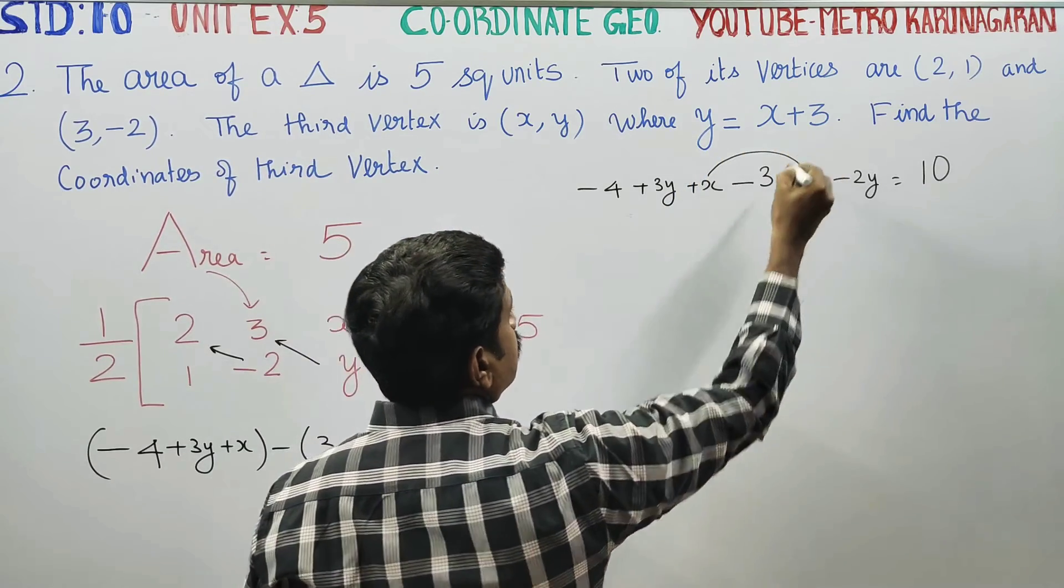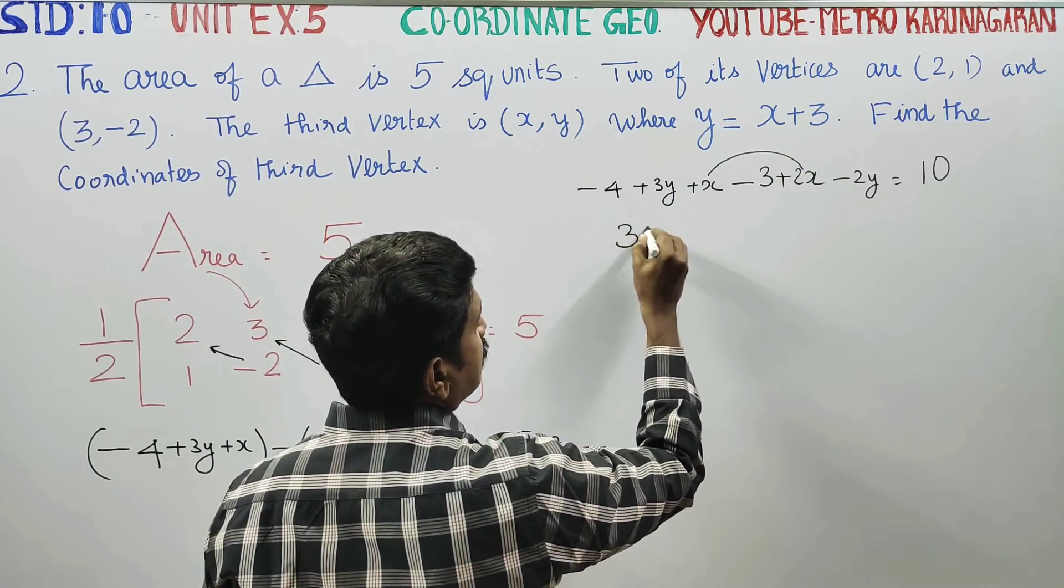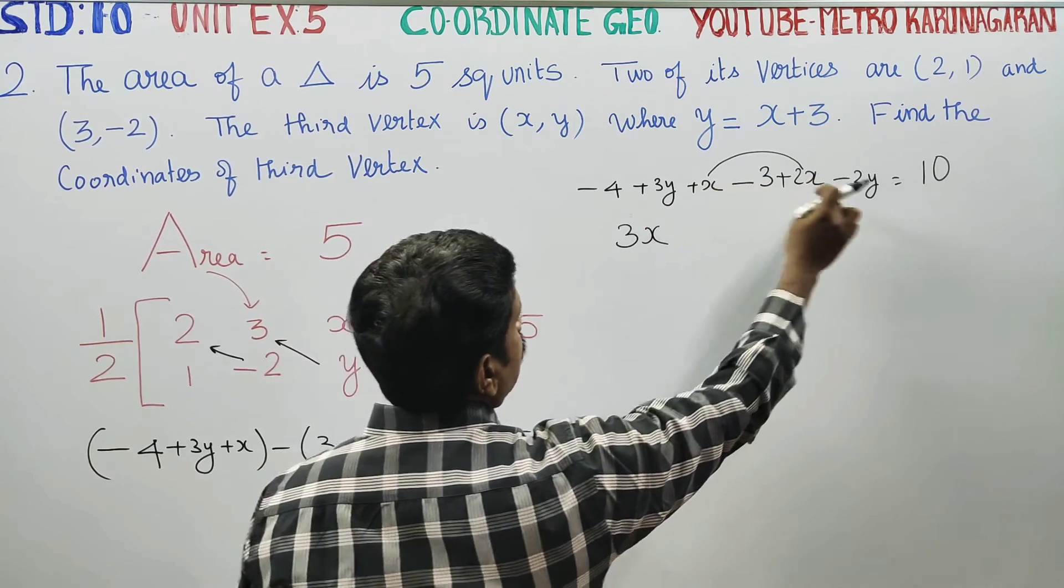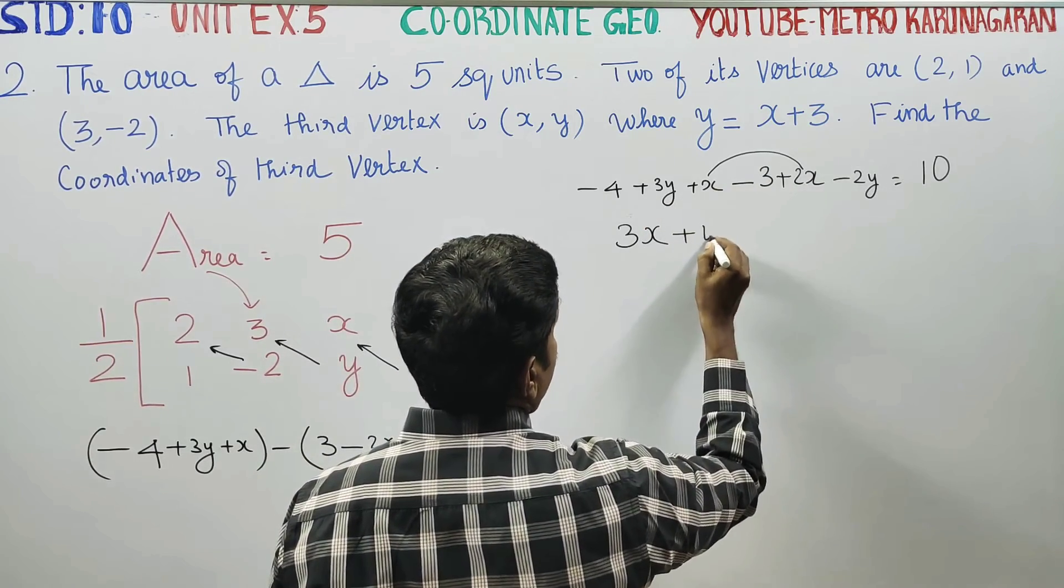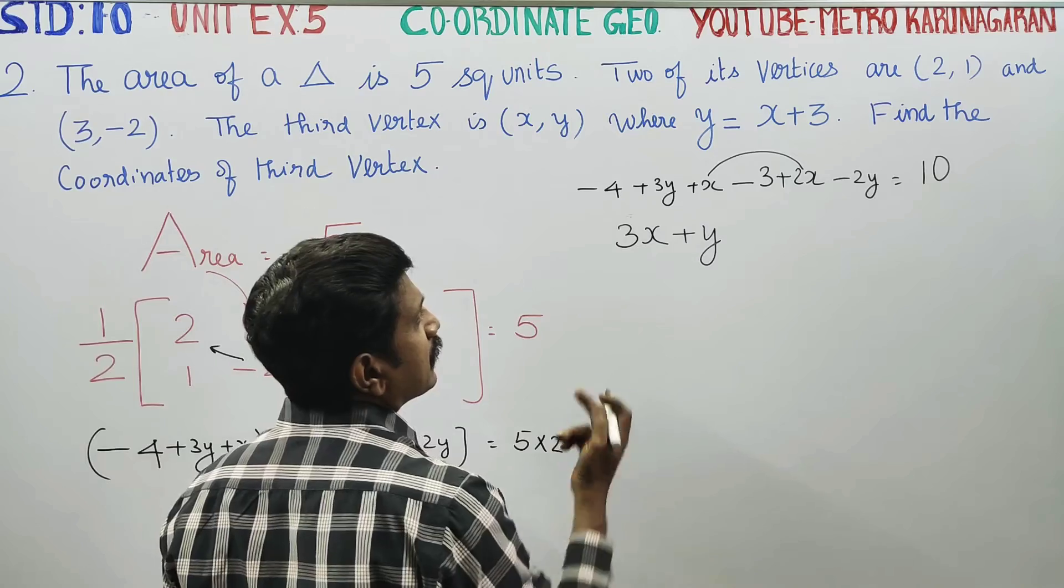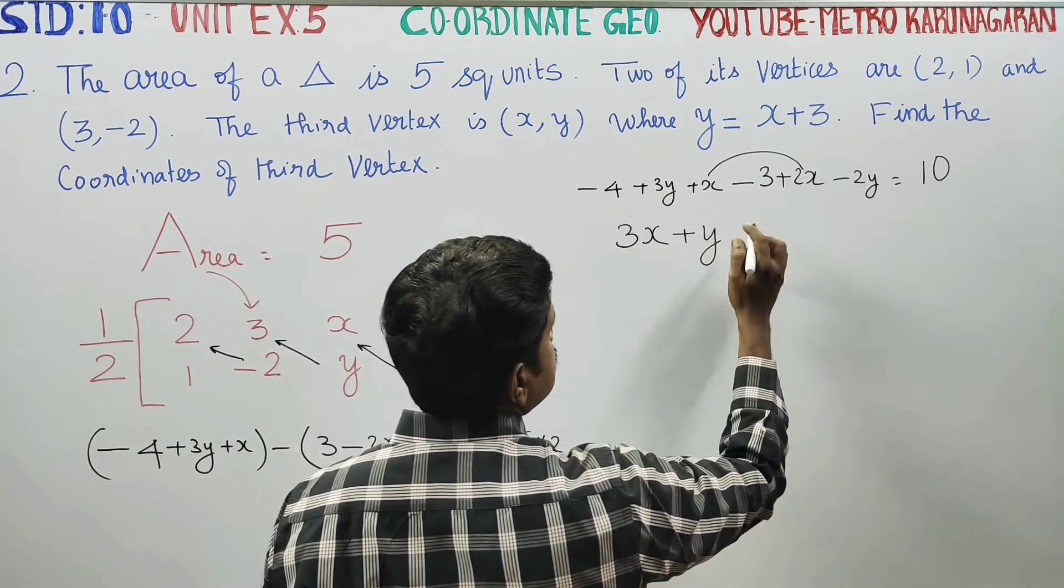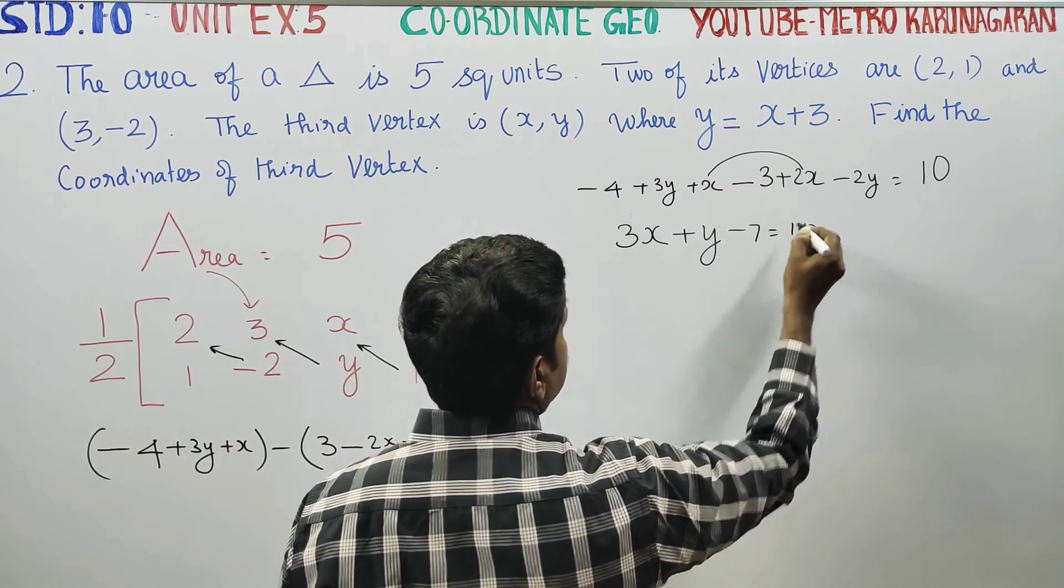2x plus 1x is 3x. 3y minus 2y is y. -4 minus 3 is -7 is equal to 10.